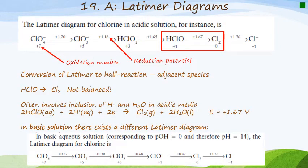So this is what a Latimer diagram looks like. It's generally given for an element and it has a numerical value of the standard potential in volts written over a horizontal line or an arrow connecting species with the element in different oxidation states. The most highly oxidized form of the element is on the left.